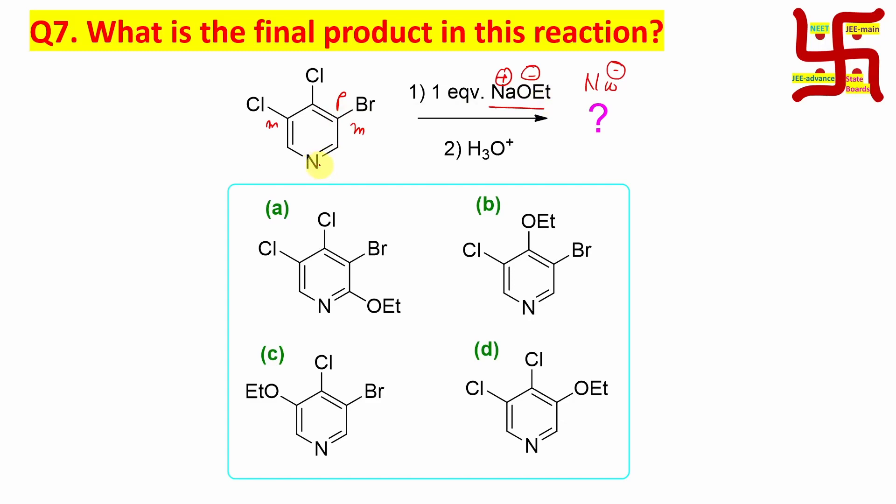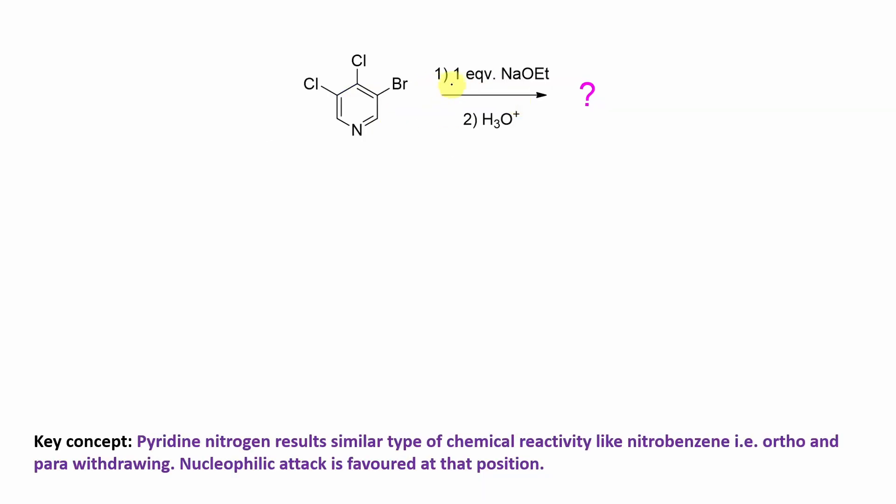If you look in the case of pyridine, the ortho and para positions have deficiency of electrons, which is indicated by this positive charge. So this deficiency of electrons welcomes the nucleophile to attack here. This nucleophile is actually welcome to attack here.